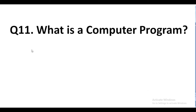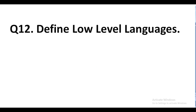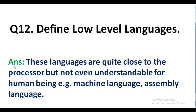Question number 11. What is a computer program? Answer. The set of instructions to solve any kind of problem is called a computer program. Question number 12. Define lower level language. Answer. These languages are quite close to the processor but not understandable for human beings. Examples: machine language, assembly language.